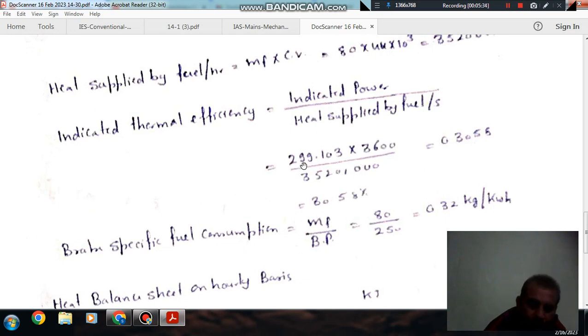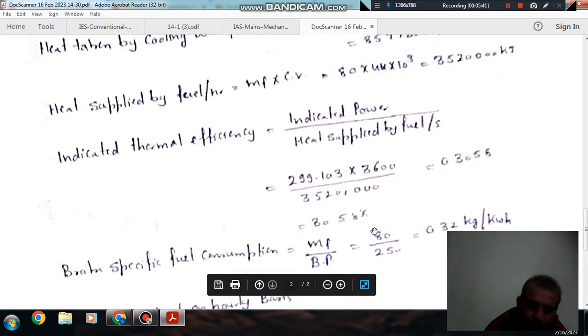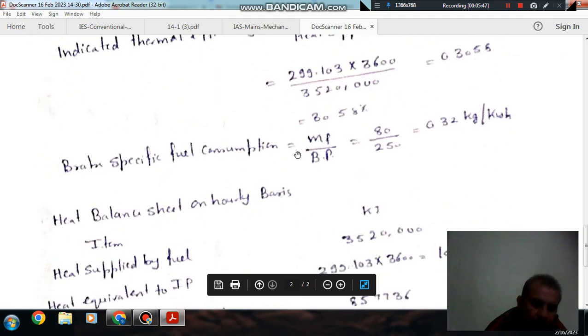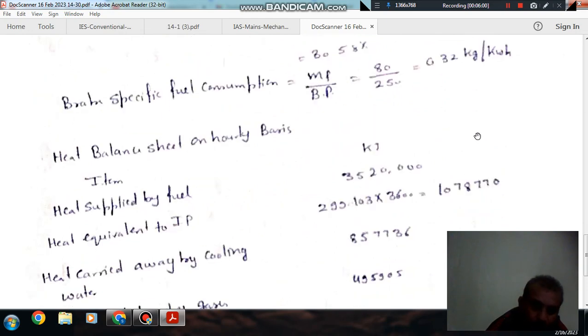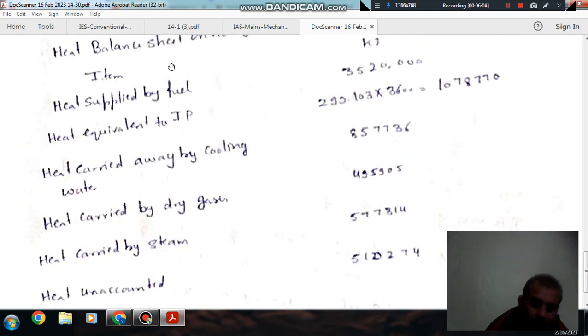Brake specific fuel consumption is mass of fuel divided by brake power. Mass of fuel is 80 kg per hour, brake power is 250 kW, so BSFC equals 0.32 kg per kWh.